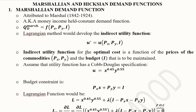The indirect utility function would be at the optimal point where the prices of the commodities PX and PY and the budget are maintained at a constant level, as already mentioned. The utility function has a Cobb-Douglas specification.